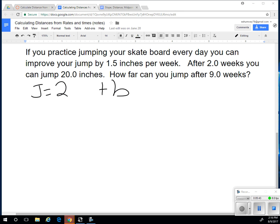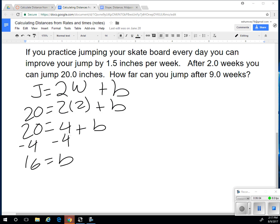I don't need a parenthesis because we're just talking about a letter. So 2w. And then we say, okay, 2 weeks, 20 inches. So 20, so that's 4, and I subtract 4, and that gives me 16, is how much I can jump without any practice. So j equals 2 more for every week that I practice, plus the 16 that I can jump without any practice.